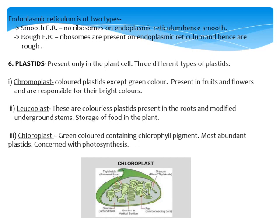Leucoplasts are colorless plastids — they do not have any color or pigment. If asked to name the plastid without any pigment, the answer is leucoplast. They are present in roots and modified underground stems. Modified underground stems are stems that become modified into round structures inside the ground — the best example is the potato, which is actually a stem. The main function of leucoplast is the storage of food.